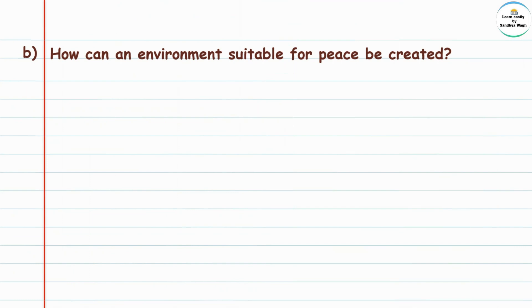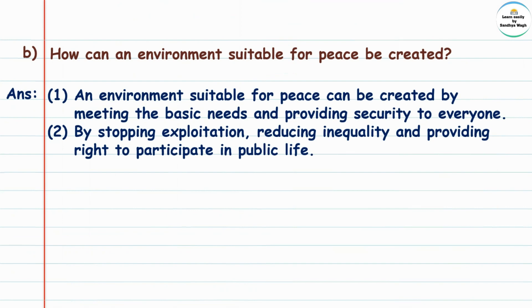How can an environment suitable for peace be created? Peace means shantata. How can an environment suitable for peace — shantate sathi yogya vatavaran — be created? Answer: An environment suitable for peace can be created by meeting the basic needs and providing security to everyone. Basic needs means moolabhoot garza, security means suraksha.